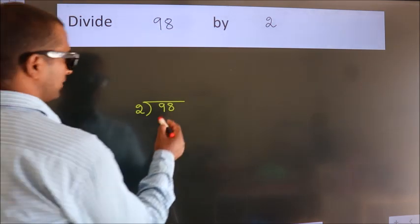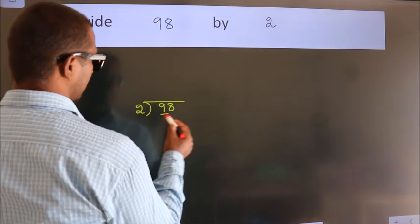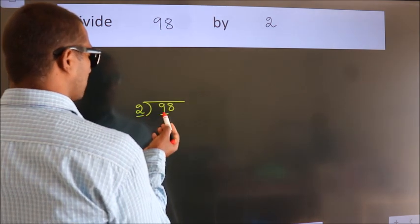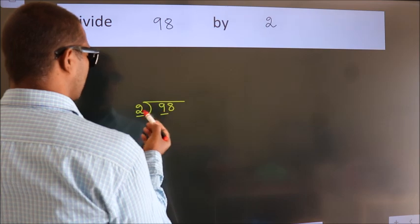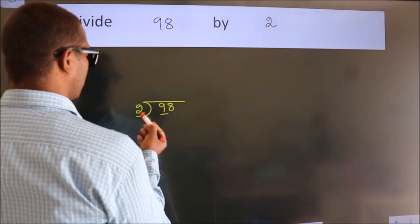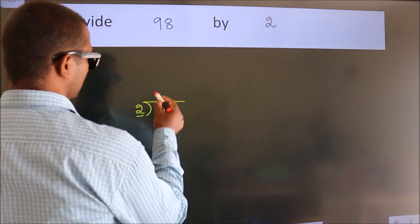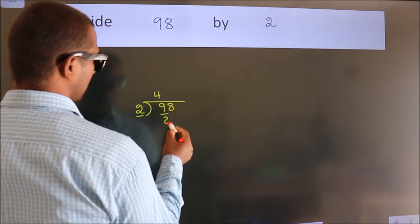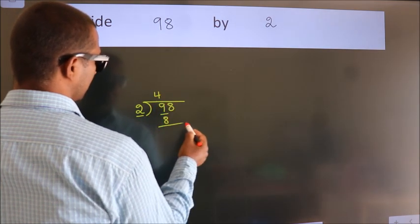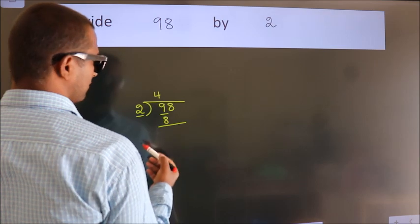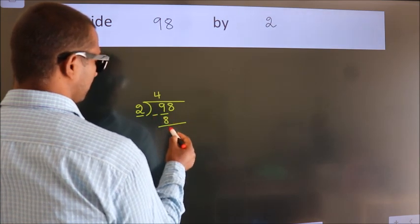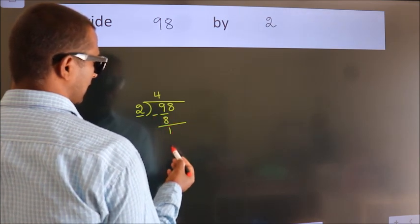Here we have 9, here 2. A number close to 9 in the 2 times table is 2 fours, 8. Now we should subtract, we get 1.